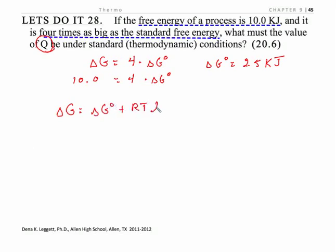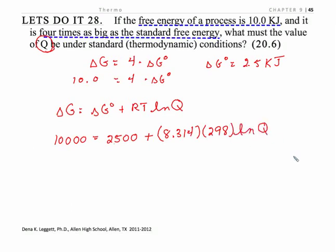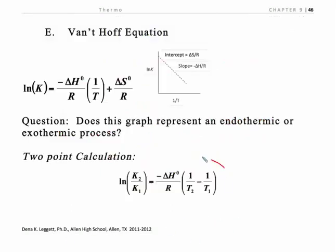Remember, delta G is delta G naught plus RT ln of Q. Because I'm not at equilibrium at this point. So let's pop those in. Remember, we must use joules. So I'm going to convert that to joules. Again, when you're doing WebAssign, before you call me over, I mean, of course I'm going to help you under any circumstances, but before you call me over, you might want to check your units. So that's my setup. If you solve for Q, you should get Q is equal to 20.6.